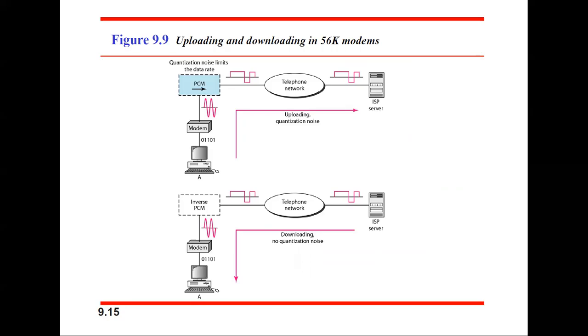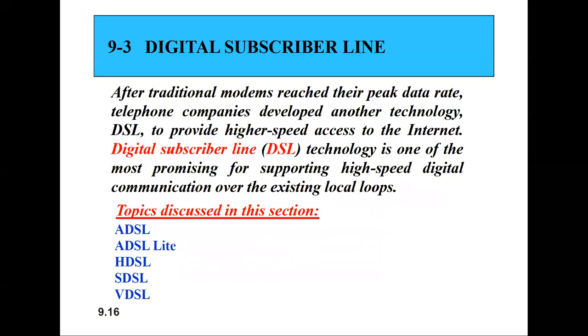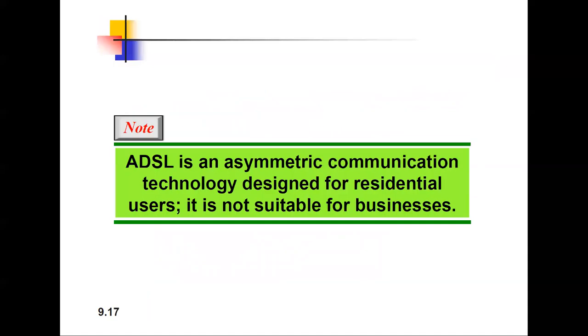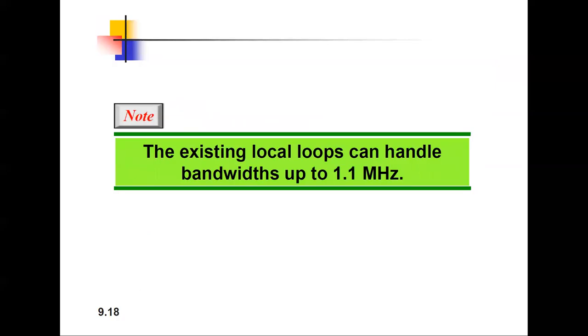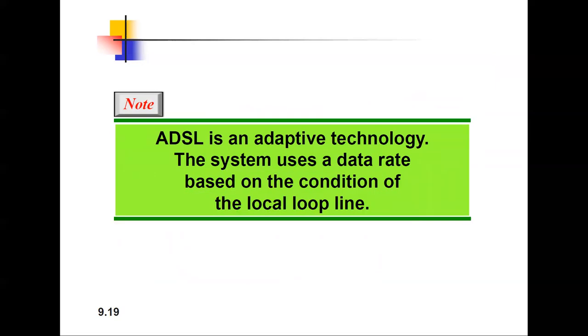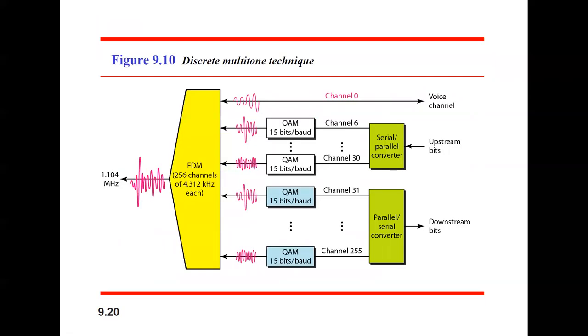Digital Subscriber Line is a technology which is one of the most promising for supporting high-speed digital communication over existing local loops. ADSL means asymmetric communication technology designed for residential users, not suitable for businesses. Existing local loops can handle bandwidth up to one megahertz. It's an adaptive technology that uses a data rate based on the local loop condition.